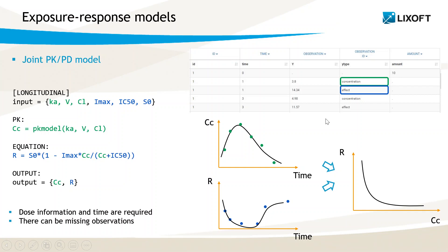Note that there can be missing observations in this case, such as measurement times where only the dose information or one of the observation types is given, meaning that we do not need to have both PK and PD measurements at each time. Individual exposure-response curves can then be derived from post-processing of the predictions.